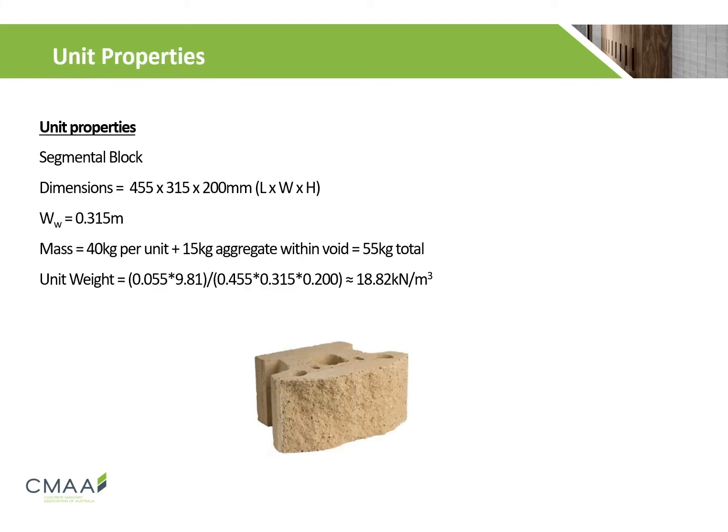For our segmental block, we require the relevant unit properties, which includes the dimensions of the masonry unit, the width of the wall, and the total mass of the masonry unit including the aggregates that lie in the voids. Combining these properties, we can calculate the unit weight for our wall, giving us a value of 18.82 kN per m³.